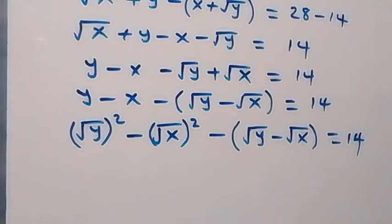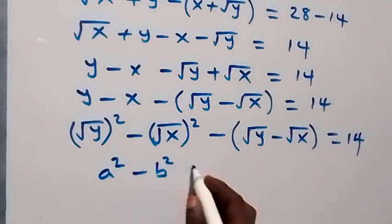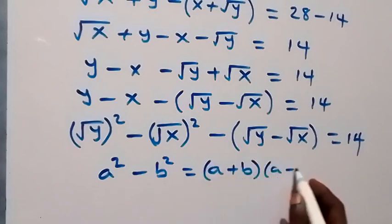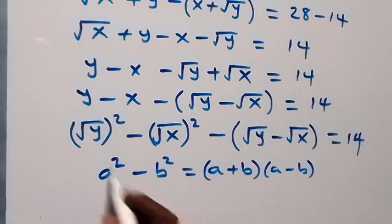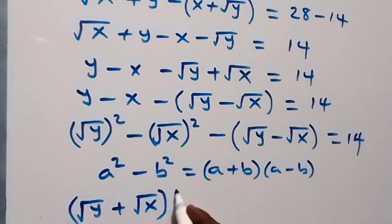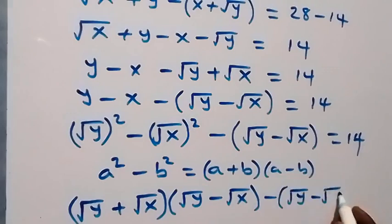Now, from what we have here, this follows from the identity a² minus b² equals (a+b) times (a−b). When we apply this to what we have here, this becomes (√y + √x) into bracket (√y minus √x), close bracket, then minus open bracket (√y minus √x), close bracket, then equals to 14.